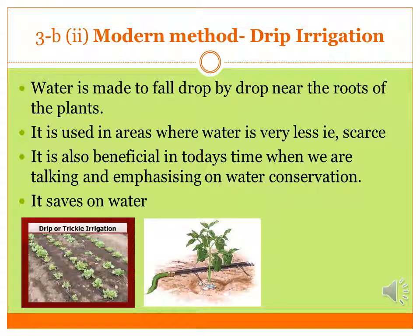Drip irrigation works the same way as when a person is being given a glucose drip — water falls drop by drop directly into the root area where it needs to be absorbed. This method is prevalent in areas where water is really scarce, and in today's time when we emphasize so much on water conservation, this method is the best one.